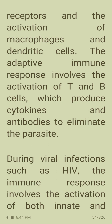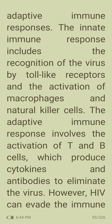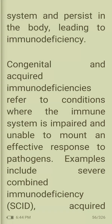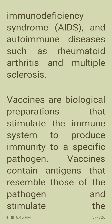During viral infections such as HIV, the innate immune response involves recognition by toll-like receptors and activation of macrophages and natural killer cells. The adaptive response involves T and B cells producing cytokines and antibodies to eliminate the virus. However, HIV can evade the immune system and persist in the body, leading to immunodeficiency. Congenital and acquired immunodeficiencies are conditions where the immune system is impaired, including severe combined immunodeficiency (SCID), acquired immunodeficiency, and autoimmune diseases such as rheumatoid arthritis and multiple sclerosis.